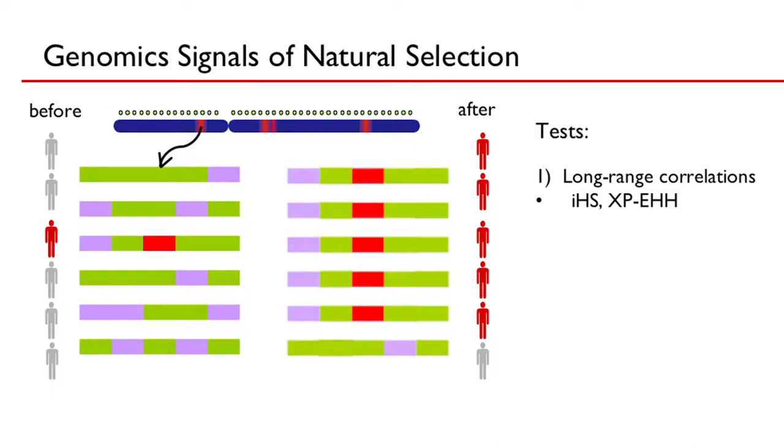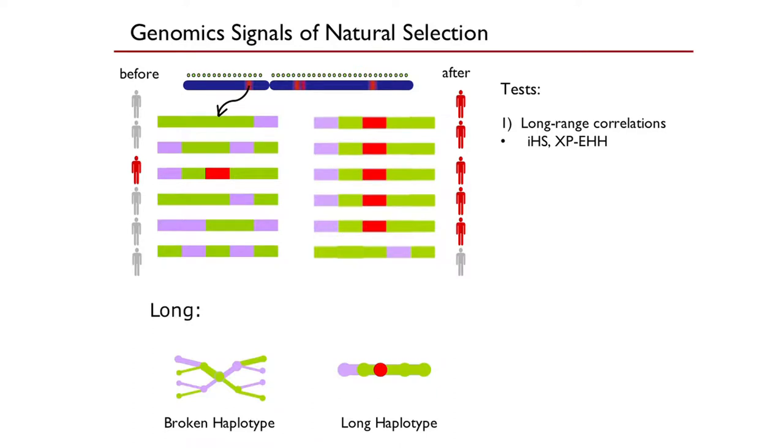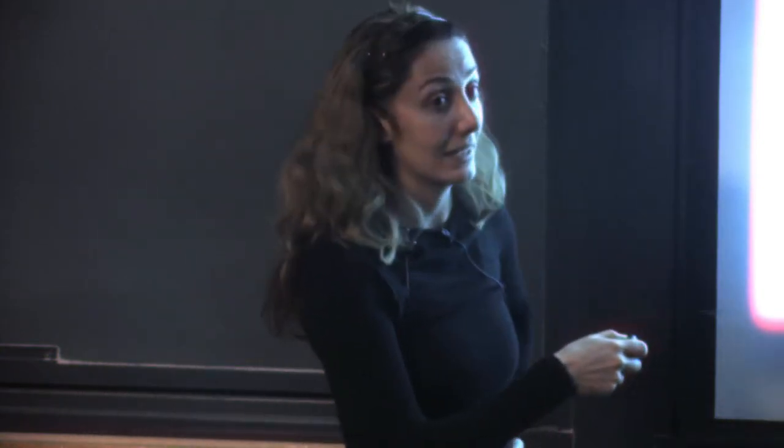There are two processes that generate diversity: mutations generating new variants in the population, and recombination that reshuffles the way those mutations lie next to each other on a chromosome. When mutations arise over generations, they start reshuffling on many different backgrounds. But when selection happens, if the mutation rises very quickly in the population, it'll happen so quickly that there won't be time for reshuffling. Not just that mutation, but the entire chromosomal context it's in rises to high prevalence, leaving signals behind in our DNA.